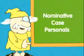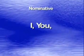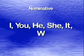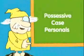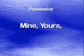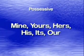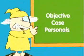Let's see how the personal pronouns break down according to case. First, the nominative case: I, you, he, she, it, we, you, they. Next, the possessive case, which shows ownership: mine, yours, hers, his, its, ours, and theirs. Finally, the objective case: me, you, her, him, it, us, you, and them.